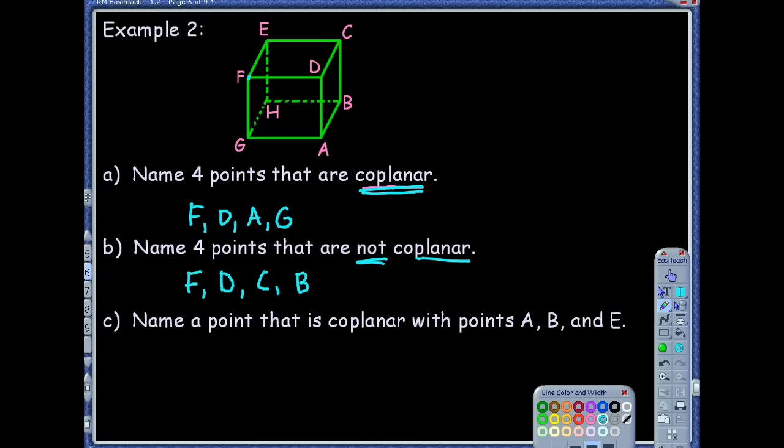Good job, good job. All right, part C, it says, name a point that is coplanar with these points. So they're giving you three points. Now, just to stress, this one's kind of a bit tricky.